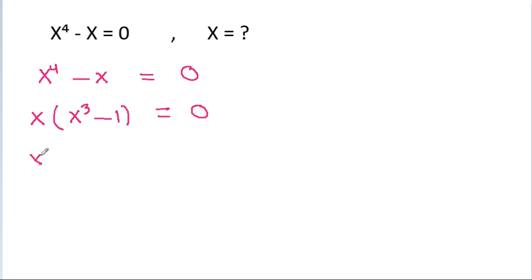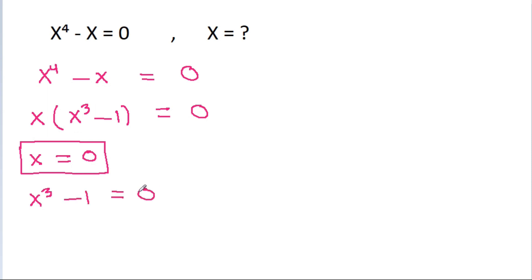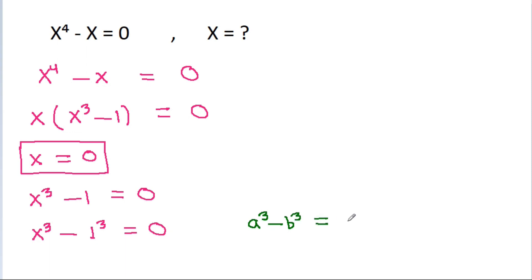So, either x will be equal to 0, or x³ minus 1 will be equal to 0. Now, x³ minus 1 is of the form a³ minus b³, and the formula is a³ minus b³ equals (a minus b)(a² plus ab plus b²).